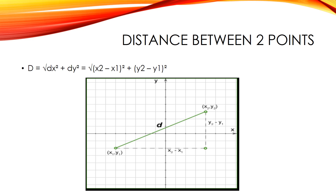Vertical and horizontal lines: if the line segment is exactly vertical or horizontal, the formula above will still work fine, but there is an easier way. For a horizontal line, its length is the difference between the X coordinates. For a vertical line, its length is the difference between the Y coordinates.